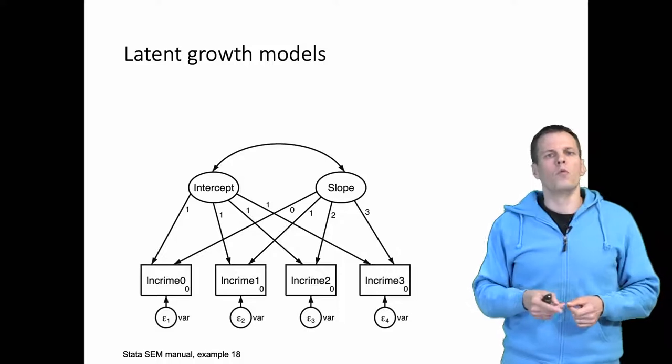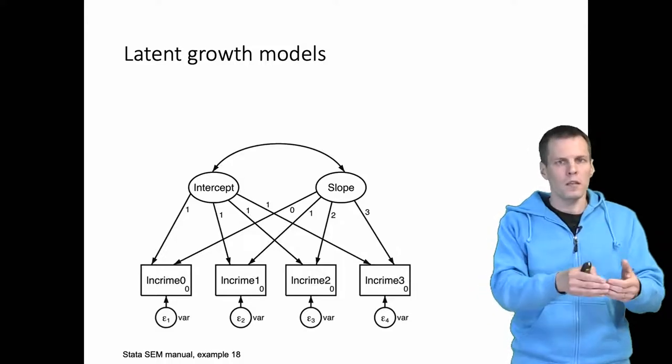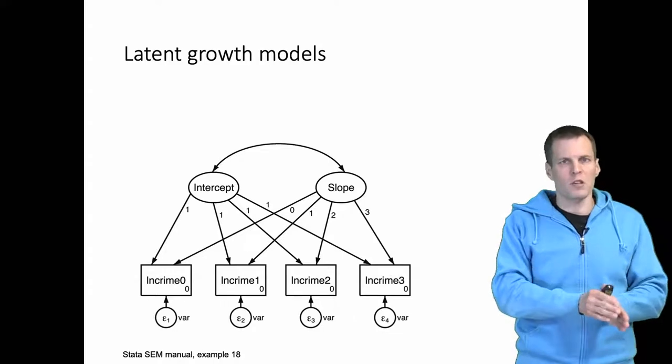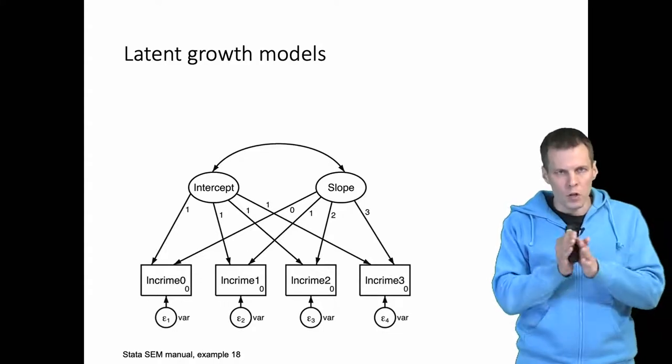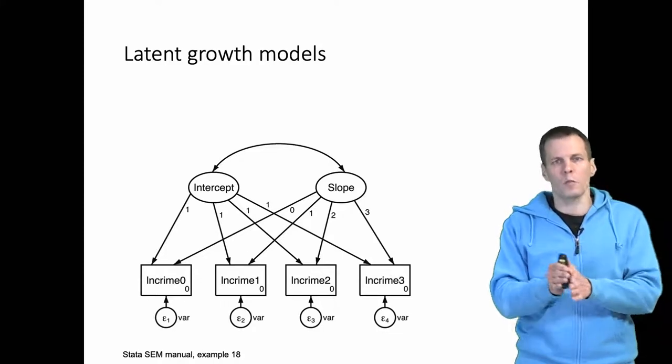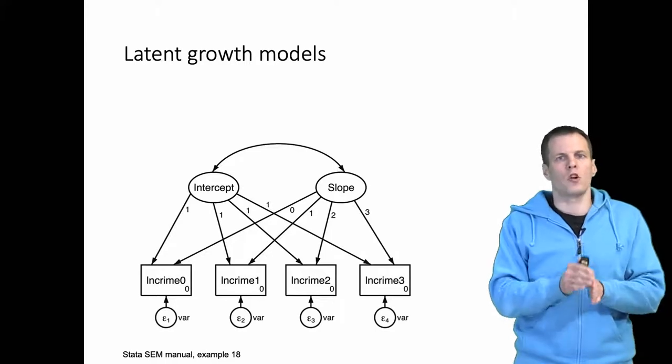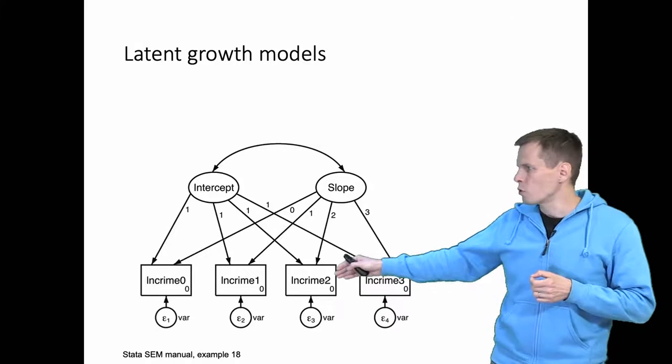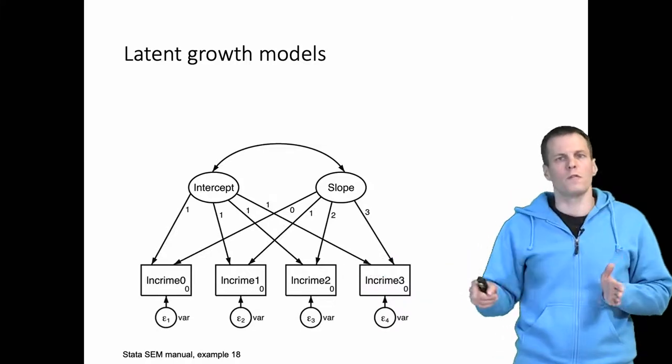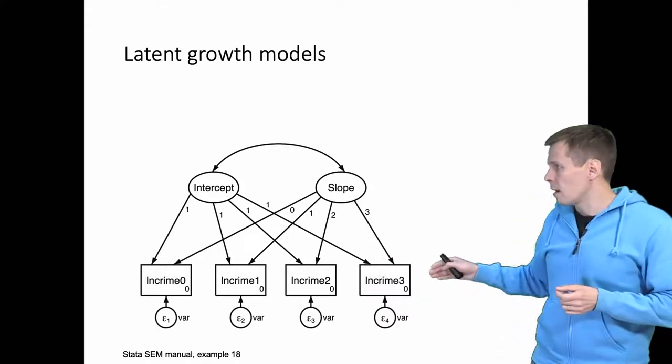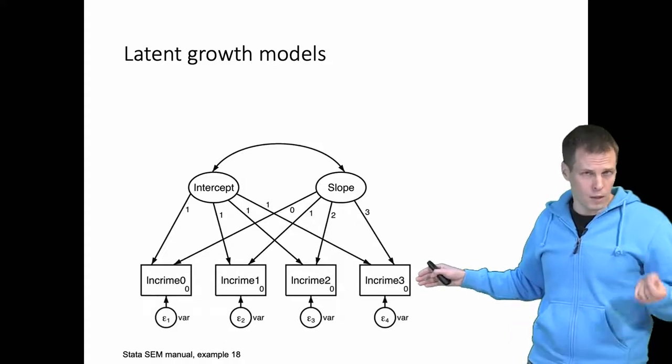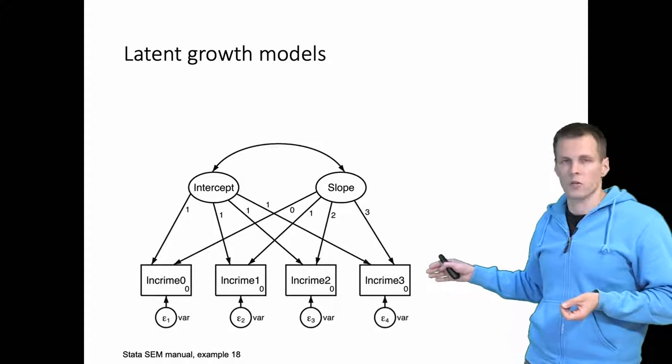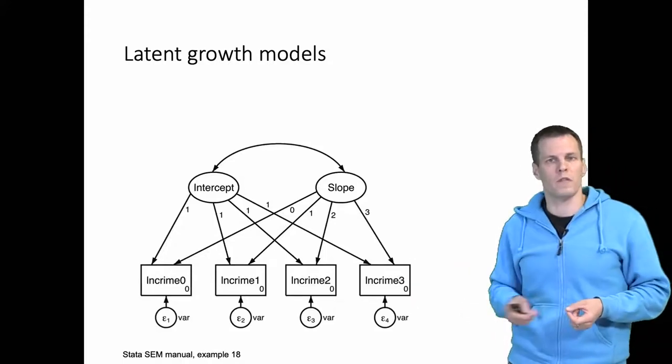We add intercept once to every observation. Slope to the initial observation is added zero times. To the first observation, which is one year from the initial observation, we add slope once. The third observation gets the slope two times because it's two years from the initial observation, and the fourth observation gets the slope three times at time three because it's three years from the initial observation.